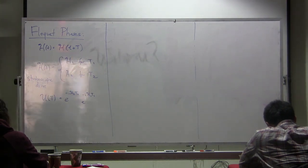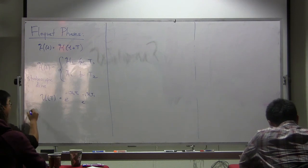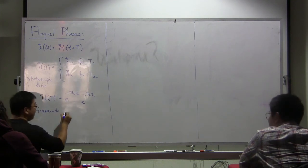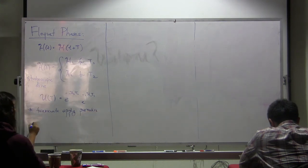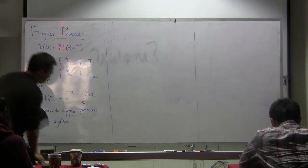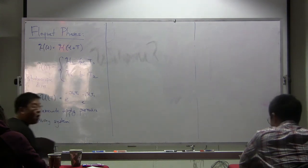The time evolution of the system is governed by the unitary U(T) for a single period, which corresponds to e to the minus iH2*T2 times e to the minus iH1*T1. There is a systematic way to figure out whether there exists an effective Hamiltonian that describes these dynamics, where we only look at the dynamics at stroboscopic times — every period T. Looking at the system in between these periods is known as looking at the micro-motion. Most of the time we're interested in the stroboscopic evolution.